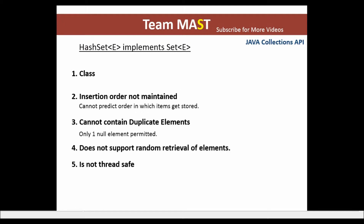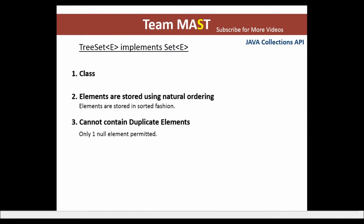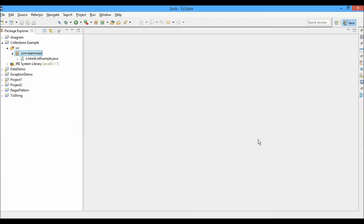We also learned about HashSet, which is a class that implements the Set interface. In a HashSet, the insertion order is not maintained, it cannot contain duplicate elements, does not support random retrieval of elements, and it is not thread-safe. Similarly, we learned about TreeSet, where elements are stored in natural ordering — that is, in a sorted fashion.